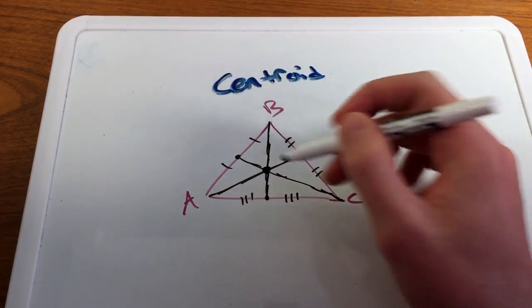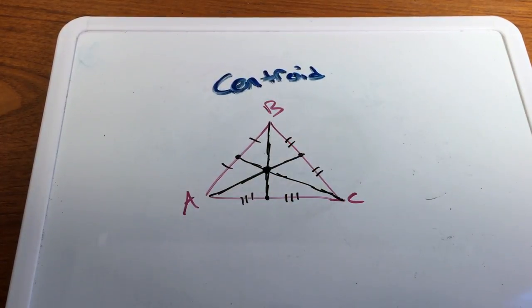And right here, this point connecting that midpoint to its opposite vertex is called the centroid of the triangle.